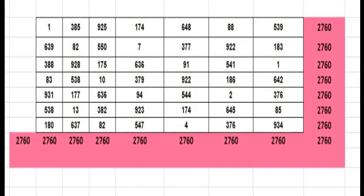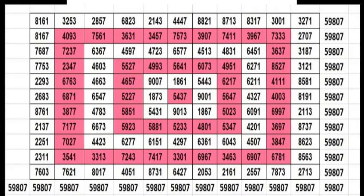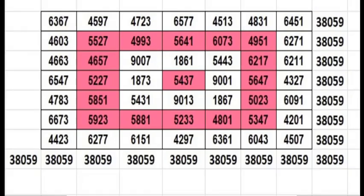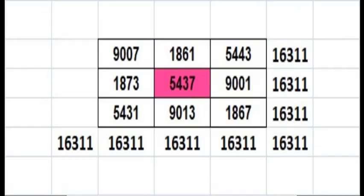This same prison inmate has created a 13 by 13 magic square using entirely prime numbers. The 13 by 13 gives a magic sum of 70,680. You remove the outer rows and columns, you get 11 by 11 with magic sum 59,807. Remove again, 9 by 9 gives 48,933. Remove again, 7 by 7 gives 38,059. Remove again, 5 by 5 gives 27,185. Remove again, 3 by 3 gives magic sum 16,311.